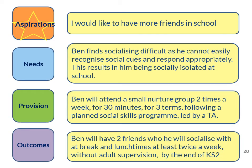This slide gives examples from each building block to show how they should link together. In Aspiration, Section A, our make-up child Ben would like to have more friends in school. In the needs — in this example, the special educational needs of Section B — it states that Ben finds socialising difficult as he cannot easily recognise social cues and respond appropriately, resulting in him being socially isolated in school. In provision — Section F, special educational provision — the plan states that Ben will attend a small nurture group two times a week for 30 minutes for three terms, following a planned social skills programme led by a teaching assistant. So it's clear what support Ben will have, when he will have it, for how long, and who is responsible for delivering it.